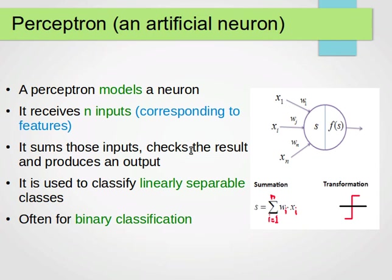It checks the result and produces an output. Checks the result, i.e. compares it to a certain threshold maybe, and then produces an output. Usually it's used for linearly separable classes, if you remember from before, and for binary classification.